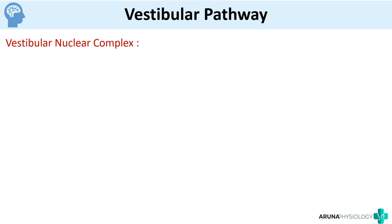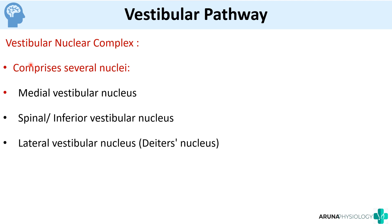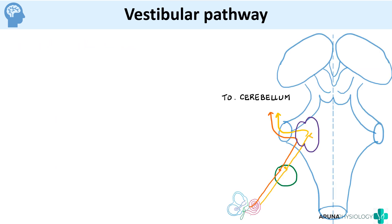The vestibular nucleus is a complex of four nuclei: the medial vestibular nucleus, the spinal or inferior vestibular nucleus, the lateral vestibular nucleus, and the superior vestibular nucleus. These are the components of the vestibular nuclei.